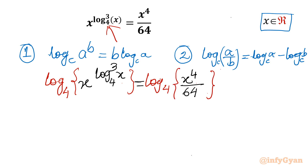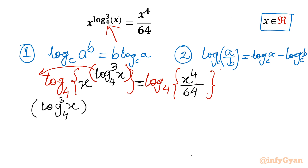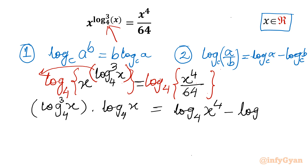Once we consider base 4, the calculation will be minimum. On the LHS I will use property number one — the exponent comes down as a multiplier. On the right-hand side the division property will be applicable. So I write: log_x base 4 whole cube times log_x base 4 equals log base 4 of x^4 minus log base 4 of 64.